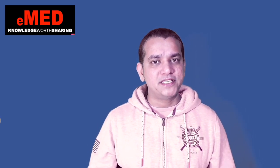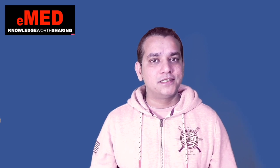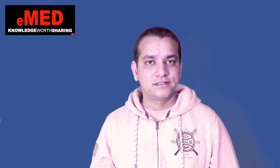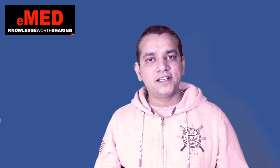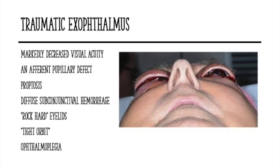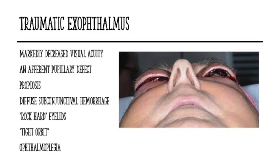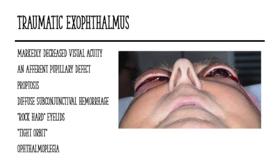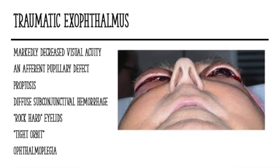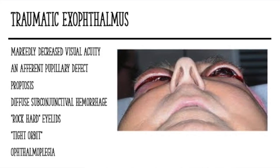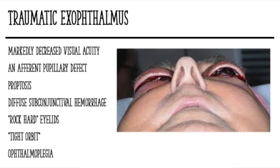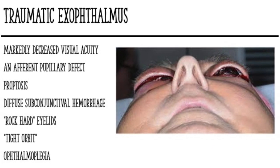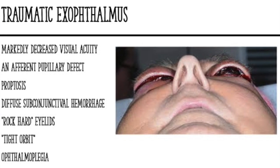A Marcus Gunn pupil can be seen in other pathologies such as optic neuritis in multiple sclerosis. The clinical findings of orbital compartment syndrome include: markedly decreased visual acuity, an afferent pupillary defect, proptosis, diffuse subconjunctival hemorrhage, a rock-hard eye, a tight orbit, and complete ophthalmoplegia — the patient is unable to move the eye.